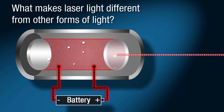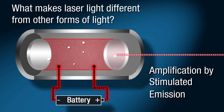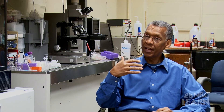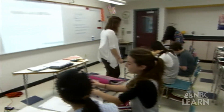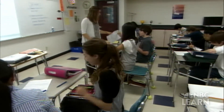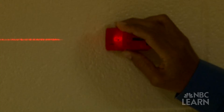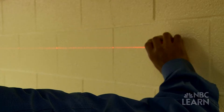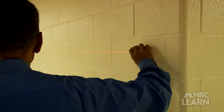What makes laser light different from other forms of light? The answer can be found in the middle part of the word: amplification by stimulated emission. We want to organize the light, and the way we do that is we get the atoms to give off their light all at the same time. Take a look at a regular light inside your classroom or house. Once you flip the switch, the light scatters and bounces off the walls. By comparison, the light emitted by a laser is very narrow and travels in the same direction, so it can be concentrated on one tiny spot.